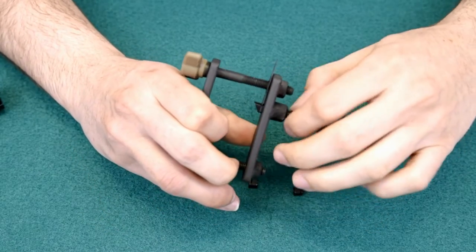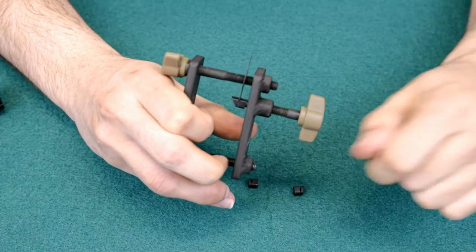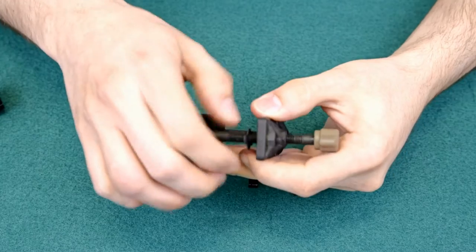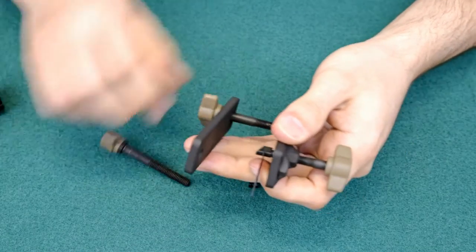To disassemble the tool, we just screw as much as to clear the plate and just remove all the components in reverse order.